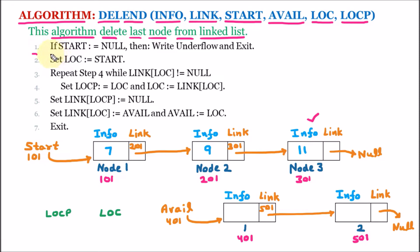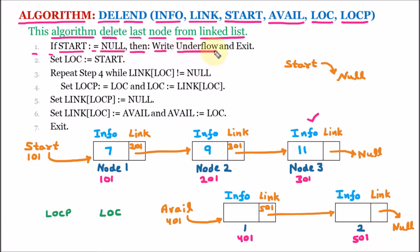Line 1 of the algorithm says: if start is equal to null, then the linked list has no nodes and deletion is not possible — we write underflow and the algorithm exits. But here this is not the case. We already have start pointing to node 1, and we also have nodes 2 and 3. Nodes are available and we can delete, so the algorithm goes to line 2.